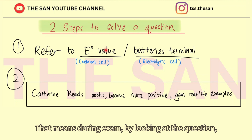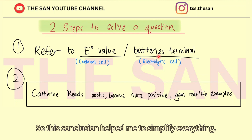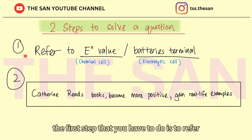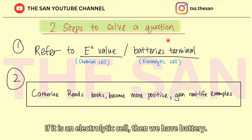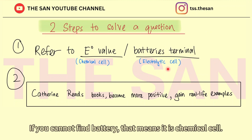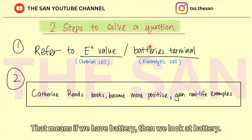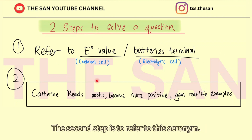During an exam, by looking at the question, I just have to apply these two steps and I can solve the question. This conclusion helps me simplify everything. The first step is to refer to either the E0 value or the battery's terminal. If it is an electrolytic cell, we have a battery, so we look at the battery terminal. If there is no battery, it is a chemical cell, and then we look at the E0 value.